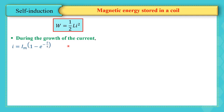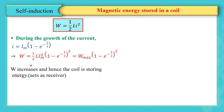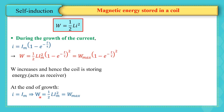During the growth of the current, i = i_max × (1 − e^(−t/τ)), so W = ½L × i_max² × (1 − e^(−t/τ))² = W_max × (1 − e^(−t/τ))², where W_max = ½Li_max². From this expression, W is increasing, so the coil is storing energy and acts as a receiver. At the end of growth, i = i_max and W = W_max = ½Li_max².